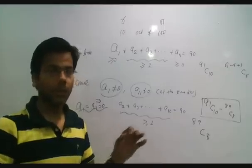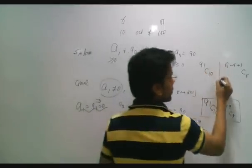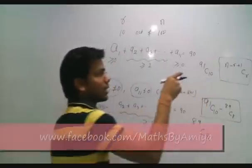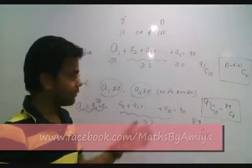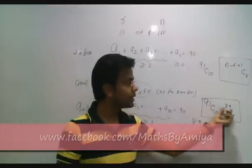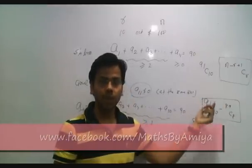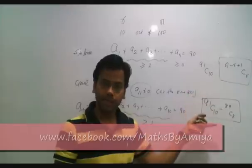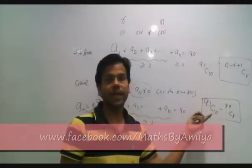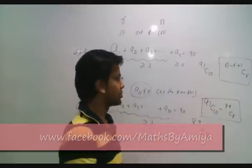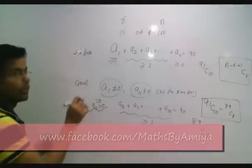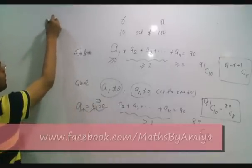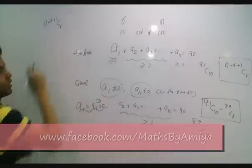Okay, so can we generalize the equation? For the straight line, the general formula is n minus r plus 1, Cr. For a circle, subtract the cases where both extreme gaps are 0, which gives n minus r plus 1, Cr, minus n minus 2r plus 1, C, r minus 2.